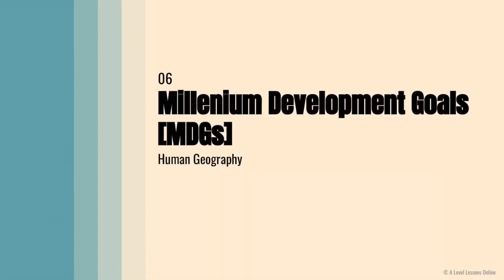Hey everyone, welcome back to A-Level Lessons Online. We're back in human geography, back to Theme 2, moving on to Part 6 on Millennium Development Goals — the MDGs. This is a very small proportion of Theme 2.1 that you need to know, and it links very closely to your Sustainable Development Goals. I'll be covering the SDGs in the next part, Part 7, so stay tuned. For this one, it's quite a simple lecture with not a lot of slides.